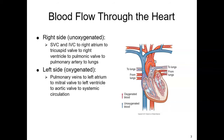Blood flows through the heart, entering the right side from the body via the superior and inferior vena cava, into the right atrium, through the tricuspid valve, to the right ventricle, then through the pulmonic valve, into the pulmonary artery, and over to the lungs. In the lungs, gas exchange occurs — oxygenated blood picks up oxygen and offloads carbon dioxide — and returns to the heart via the pulmonary veins, entering the left atrium, through the mitral valve, to the left ventricle, through the aortic valve, and finally off to systemic circulation.